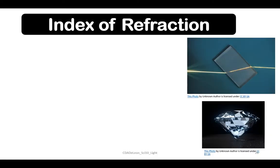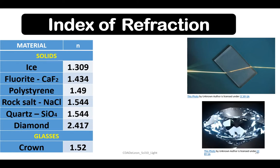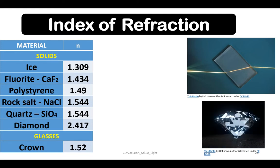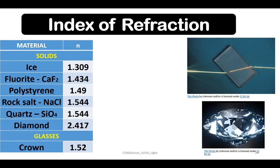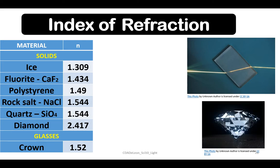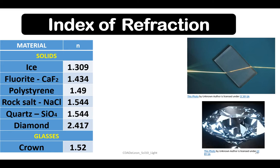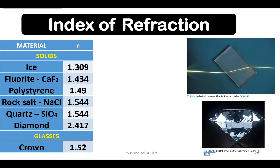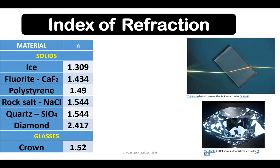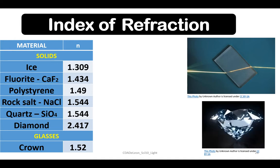Let's discuss the different Index of Refraction. First, we have solids. Ice has an Index of Refraction of 1.309. Fluoride, the mineral form of calcium fluoride, with Index of Refraction of 1.434. Polystyrene, ito yung styrofoam, 1.49.